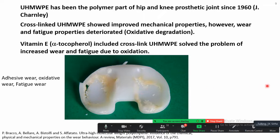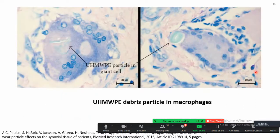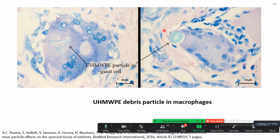Adhesive wear happens when there is no lubrication — the two materials are in almost dry contact. The problem with wear debris of UHMWPE, as well as any other material whether metal or ceramic, is that they end up in the joint and are eventually consumed by macrophages. Since these particles are polymeric, they may not be consumed by macrophages, so the body reacts to the presence of these debris particles — this causes the problem in the patient.